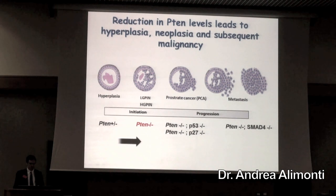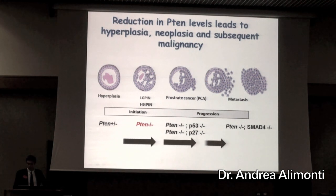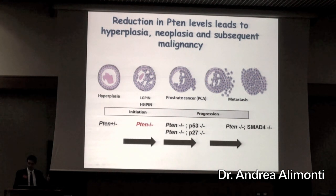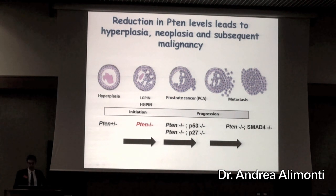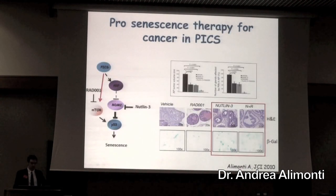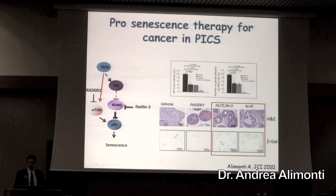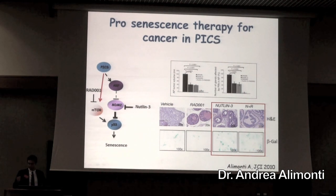If we remove this barrier — because we get a second mutation in, for instance, P53, as I showed you at the beginning, or in P27, which is another gene — this tumor can progress. So the idea of pro-senescence therapy is just to reinforce that barrier that I showed you at the beginning.